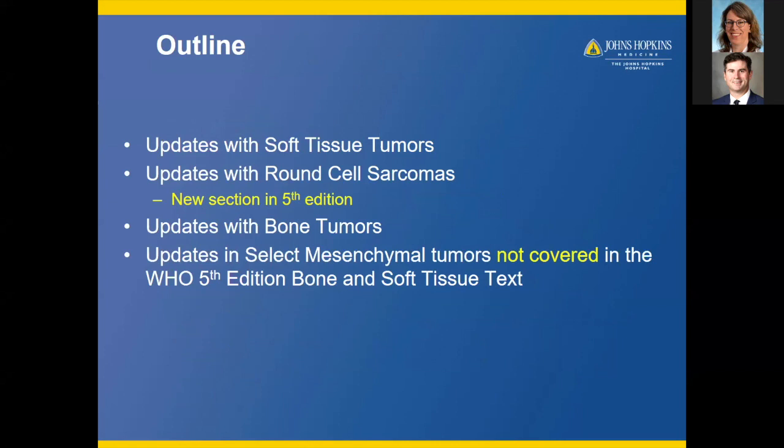As an outline, I'm going to talk about updates in soft tissue tumors, followed by updates in round cell sarcomas — which is a new section in the fifth edition — followed by updates in bone tumors. And then briefly, I'll talk about some select mesenchymal tumors not covered in the WHO fifth edition bone and soft tissue text, but relevant for the general surgical pathologist.